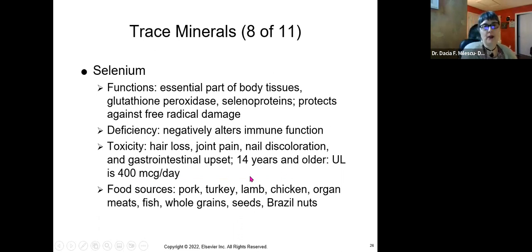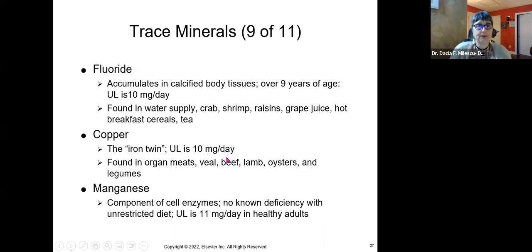Selenium. So probably not heard much about selenium, but it is essential for body tissues. Glutathione peroxidase is an enzyme and selenium is in the process of making that enzyme. Selenoproteins, which protects against your free radical formation, which causes cancer. So you need to have a healthy dose of selenium. Too little and your immune system is not functioning properly. Too much, you get hair loss, joint pain, nail discoloration, GI upset. 14 years and older, pretty much you need about 400 micrograms per day. Sources, pork, turkey, lamb, chicken, organ meats, fish, whole grains, seeds, and Brazil nuts. So if you are a vegetarian, make sure you eat seeds and Brazil nuts and specific whole grains to make sure that you get enough selenium.